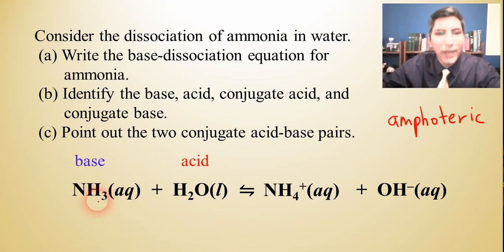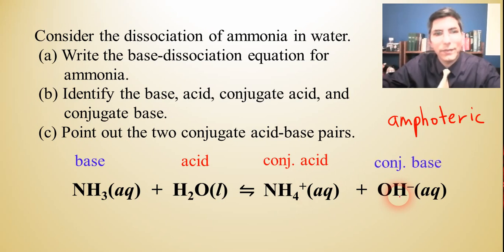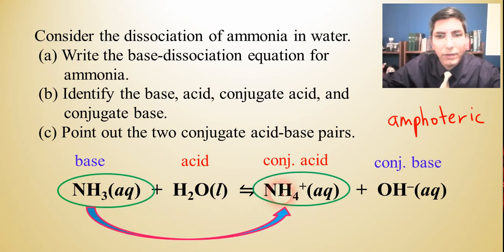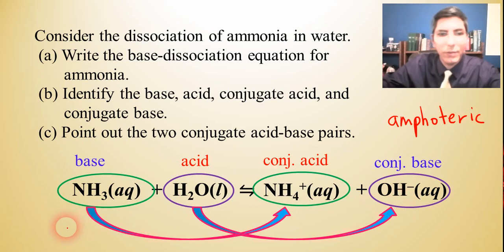Now, what is the conjugate acid? Well, here's the base. Ammonia is the base. So the conjugate acid would have to have one more H+ than that. So that would be the ammonium, wouldn't it? That's our conjugate acid. And that means hydroxide would have to be our conjugate base. And then part C says, point out the two conjugate acid-base pairs. Well, we see a base here, and there's its conjugate acid. And then water would pair up with hydroxide as a conjugate acid-base pair.